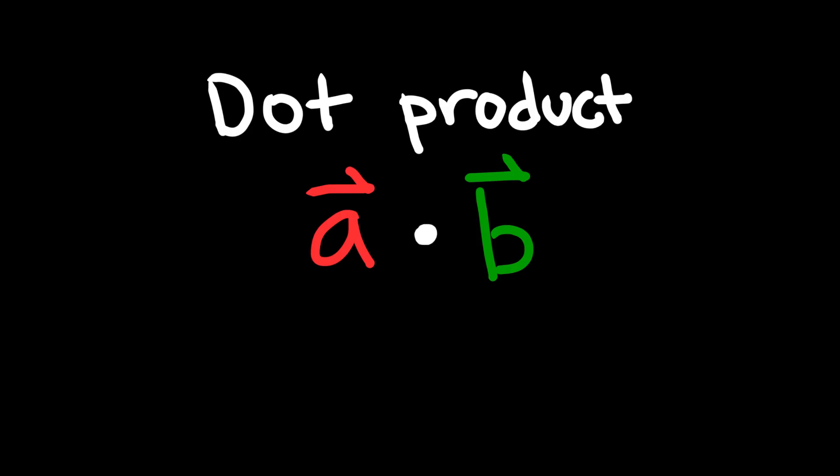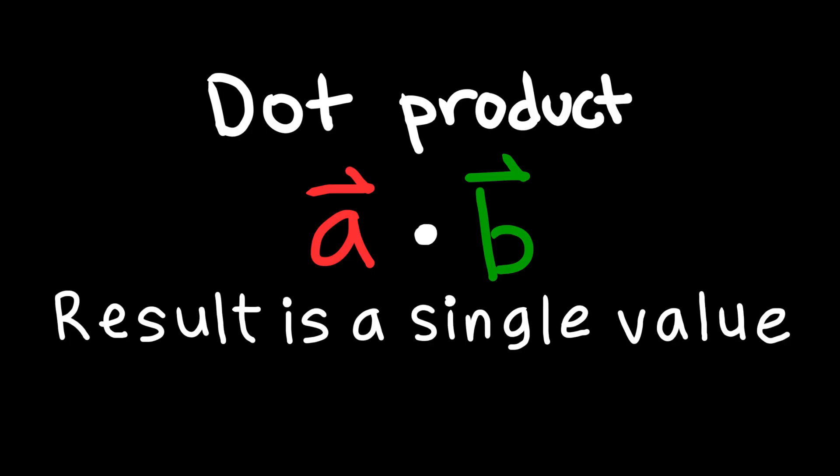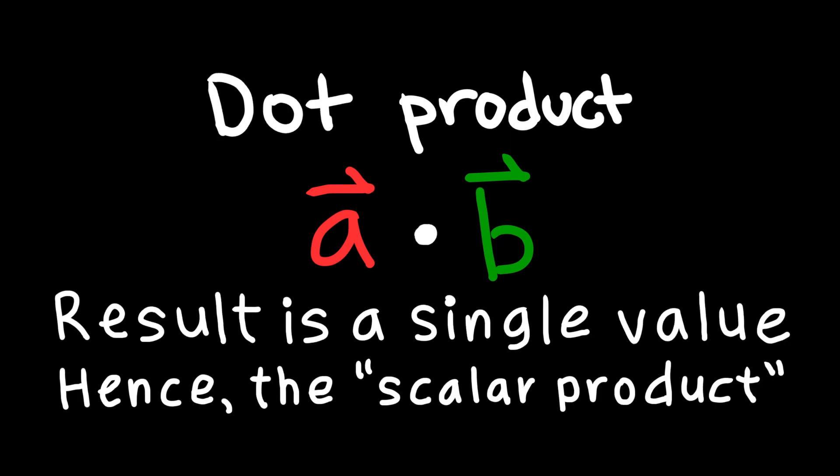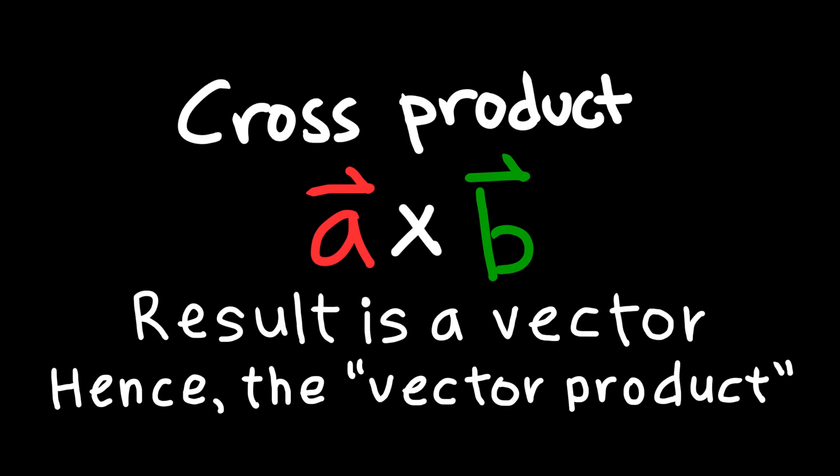In contrast to the dot product, which is also sometimes known as the scalar product of two vectors, the cross product will return a vector itself rather than a single number, hence why the dot product is sometimes called the scalar product and the cross product is sometimes called the vector product. One returns a scalar, the other returns a vector.